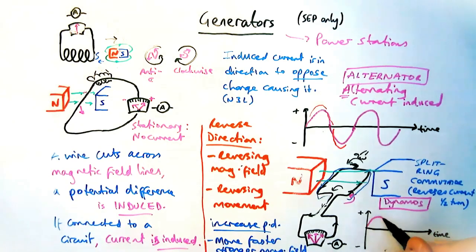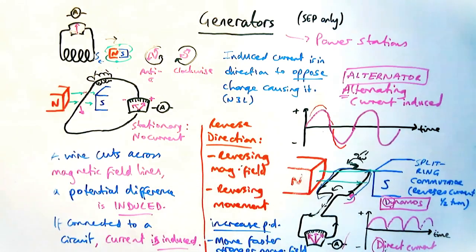So it starts off the same, goes positive, but instead of going negative, it flips the current. So now it's positive again, and positive, and it continues being positive at different values, but all in the same direction. So it's direct current. Way of remembering it is dynamos, d direct current, alternators produce alternating current, begin with an a.